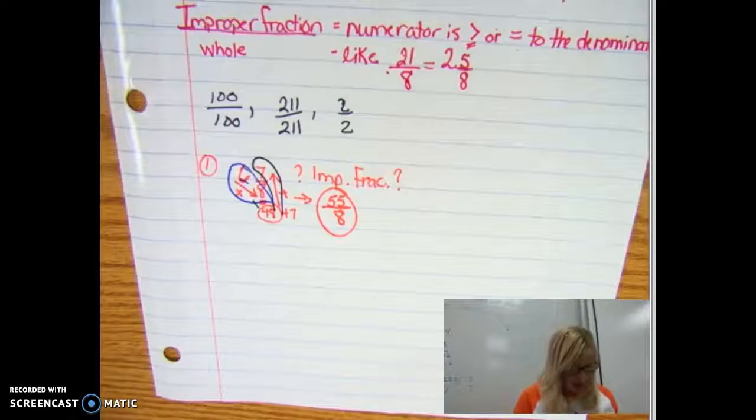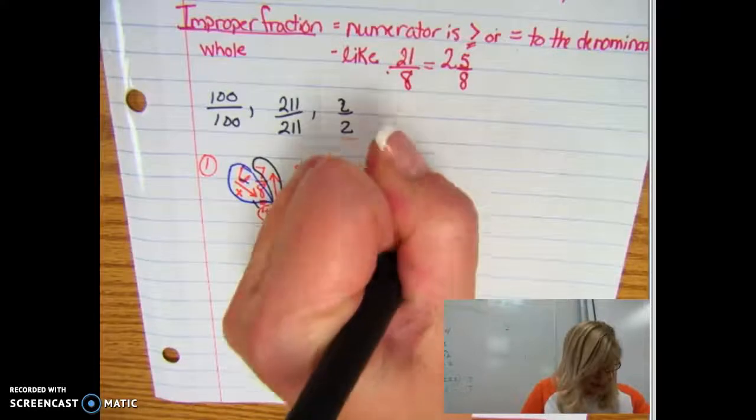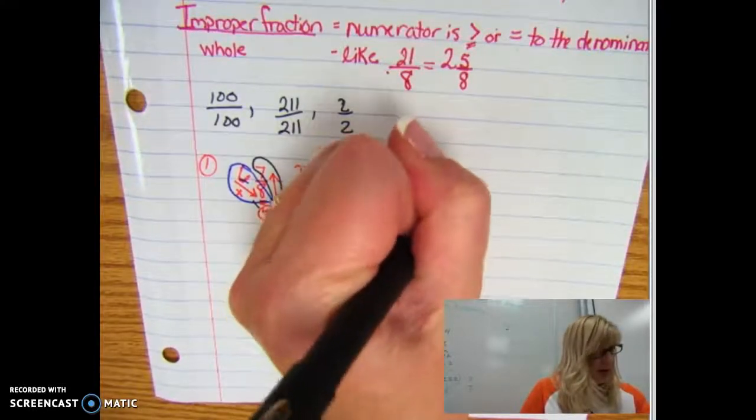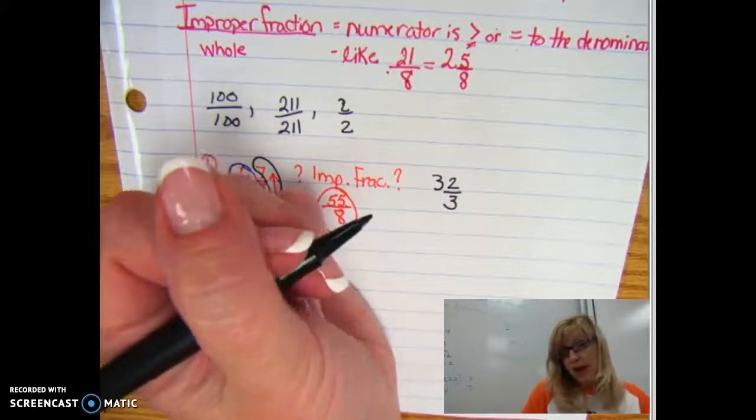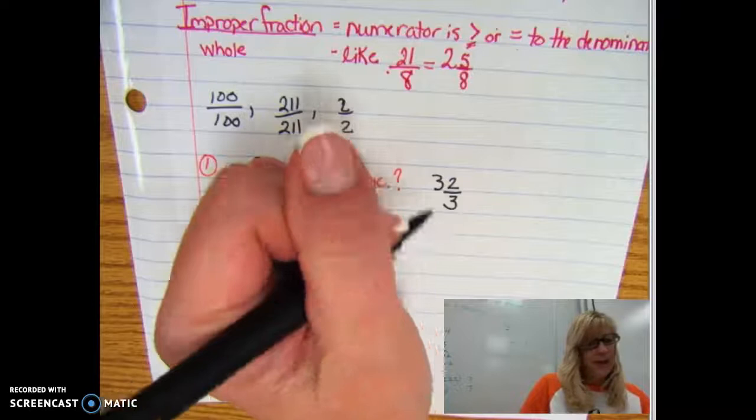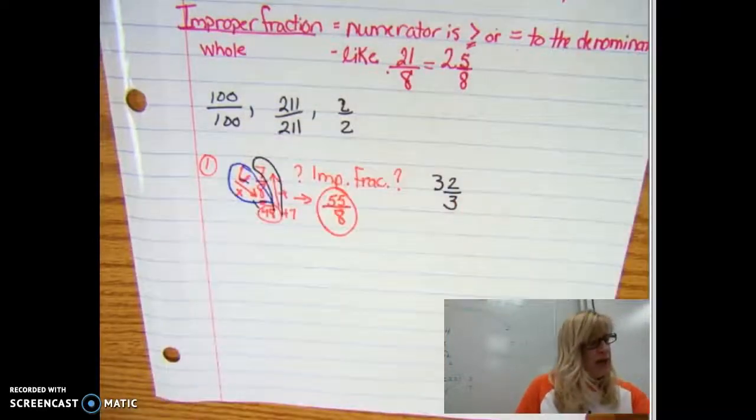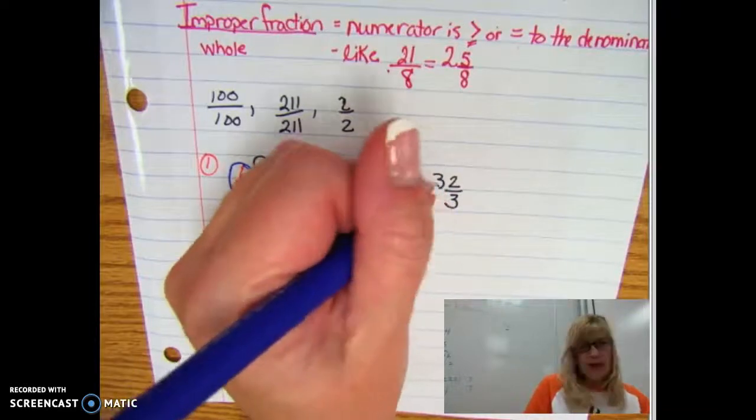We'll try another one here. Let's look at three and two thirds. Pause the video and try to write that as an improper fraction. All right, when we look at this we know that we have thirds and a whole.